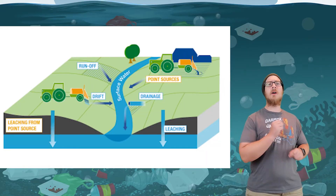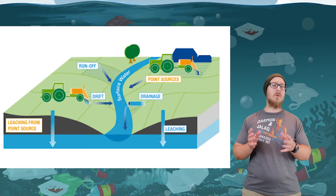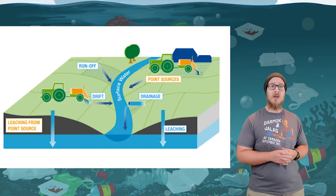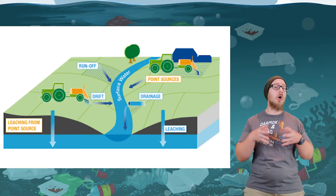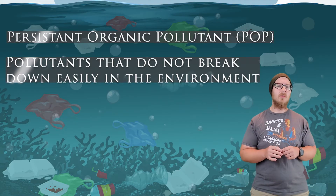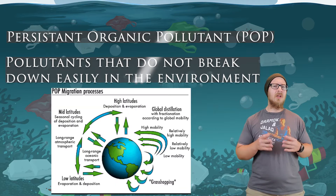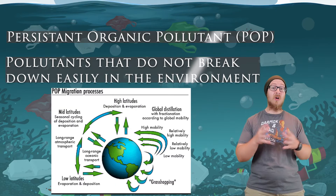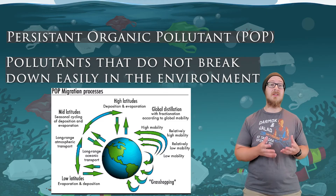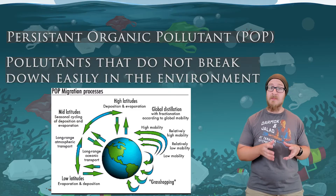Pesticide runoff is another issue from agriculture. Pesticides used on farms can enter bodies of water where they are absorbed and impact aquatic organisms. Some pesticides belong to a large group of chemicals called persistent organic pollutants (POPs), which are chemicals that do not easily break down in the environment. POPs have been shown to travel large distances via wind and water currents before being deposited elsewhere, so they are very mobile and their pollution is not limited to the source.